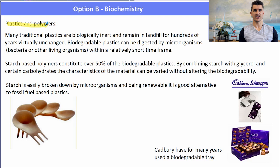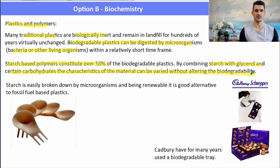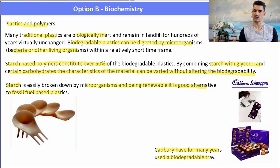Many traditional plastics are biologically inert and remain intact for hundreds of thousands of years. Biodegradable polymers can be digested by microorganisms within a relatively short time frame. Starch-based polymers make up about 50% of biodegradable plastics — they're a mixture of starch and glycerol, and by changing the amounts we can vary the type of material. Starch is easily broken down by microorganisms and is renewable, making it a good alternative to fossil-fuel plastics. On the right-hand side is an image of the Cadbury box — that little plastic is actually biodegradable, reducing our carbon footprint.